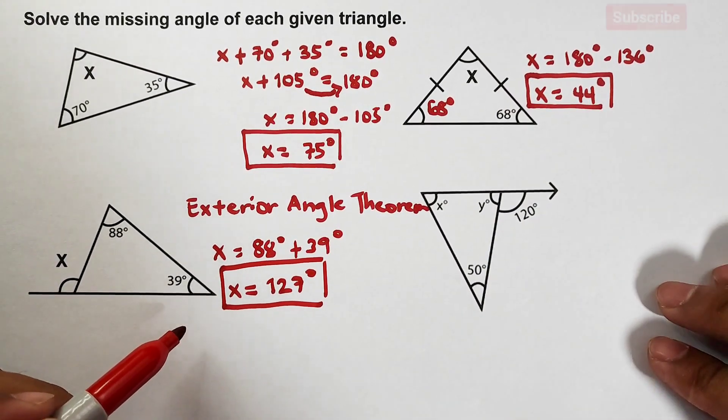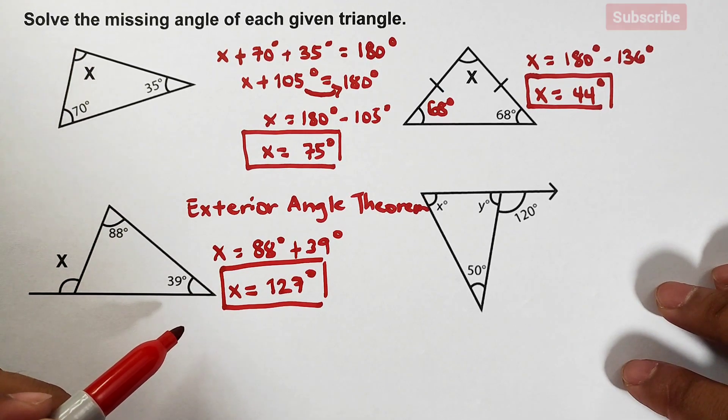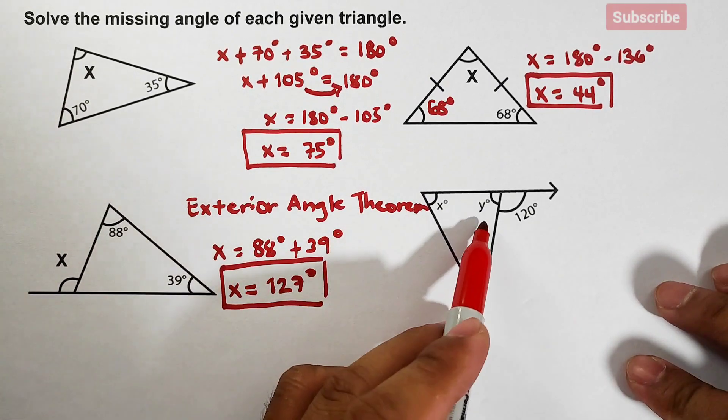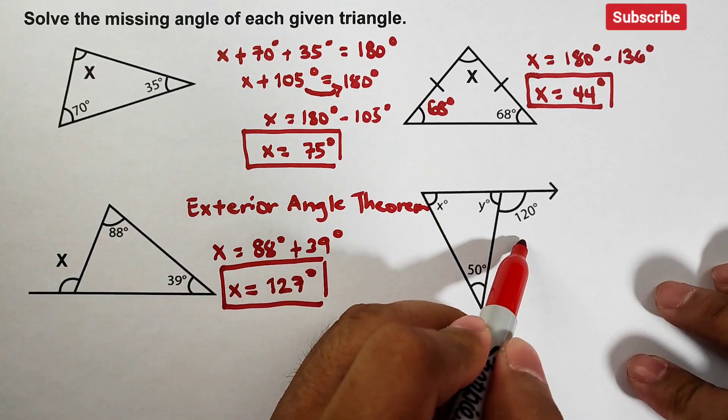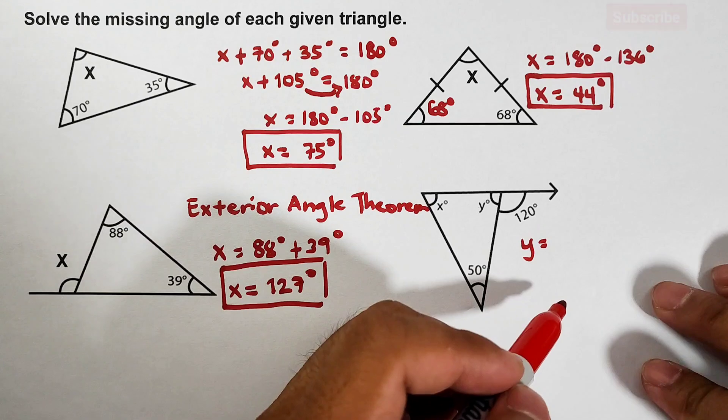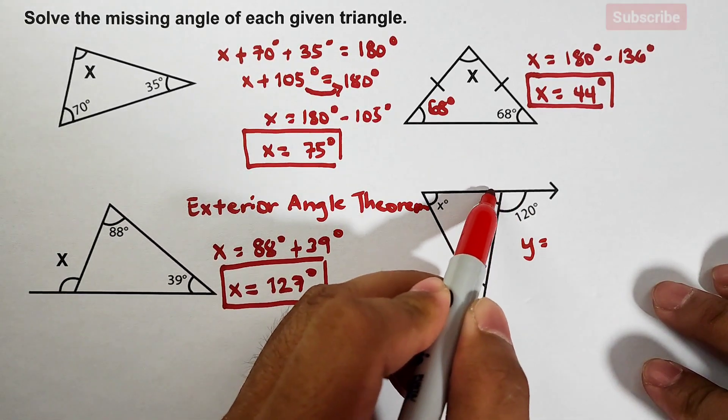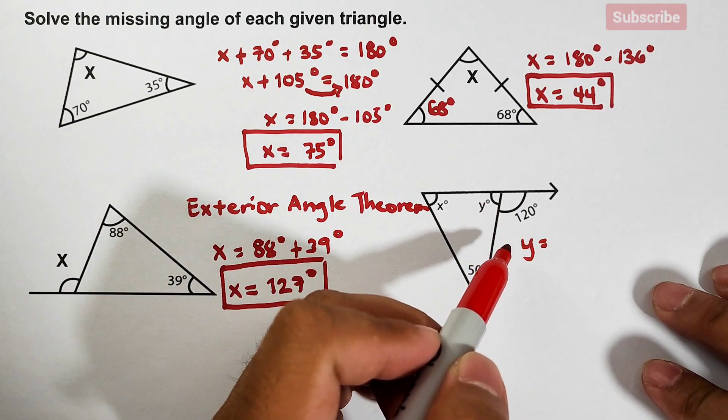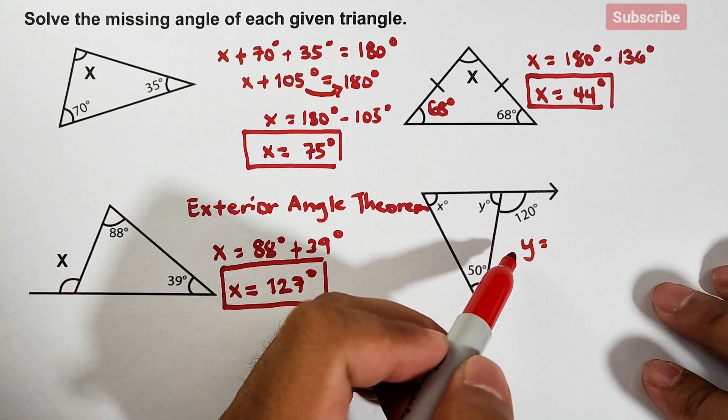Okay, now how are we going to solve for the x? So in this case I will try to solve first the variable y because it's simpler compared to x. Your y can be solved using the linear pair, because these two, this angle and this 120, forms a linear pair, and linear pair or the angles forming a linear pair are supplementary.